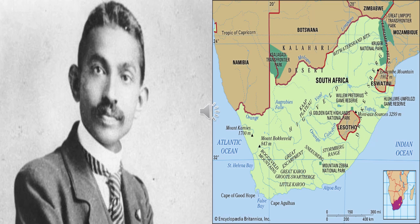As a human being, Gandhi had all the rights to travel in the first-class compartment. He had the ticket of first class, but he was thrown off from the train. Why? Because of his race — because of his skin color. Discrimination is not only based on color. It is on the basis of race, gender, place of birth, caste, religion and so on. Due to this discrimination, people are prohibited from enjoying their basic human rights.